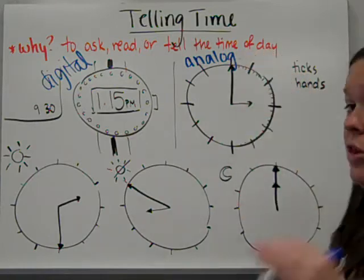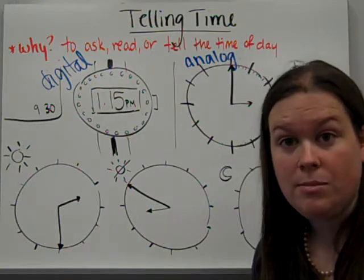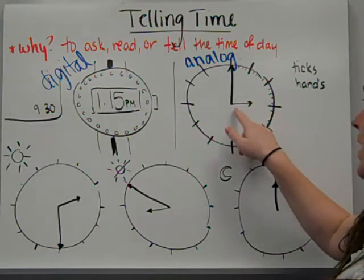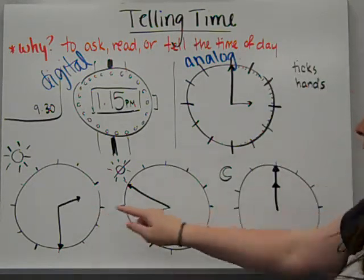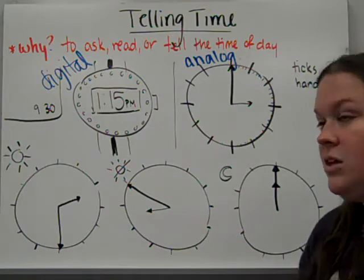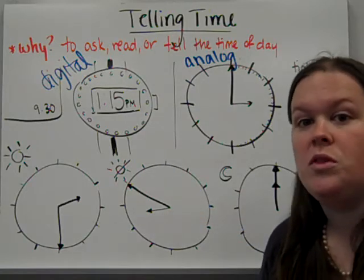Hand wise, the long hand or the big hand, that tells you how many minutes. And the short hand tells you what hour you're on. So I've got three times right here. I'd like you to try and guess what those times are.